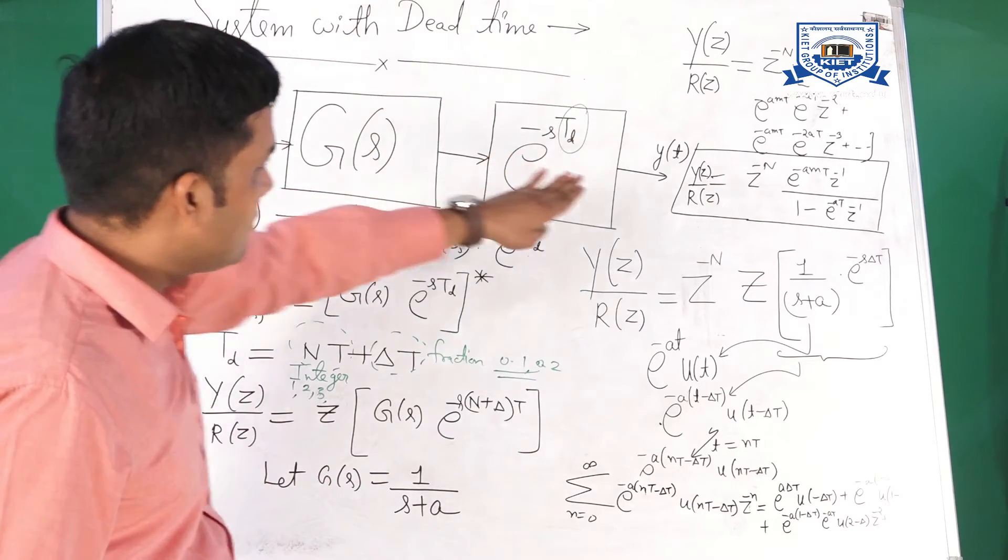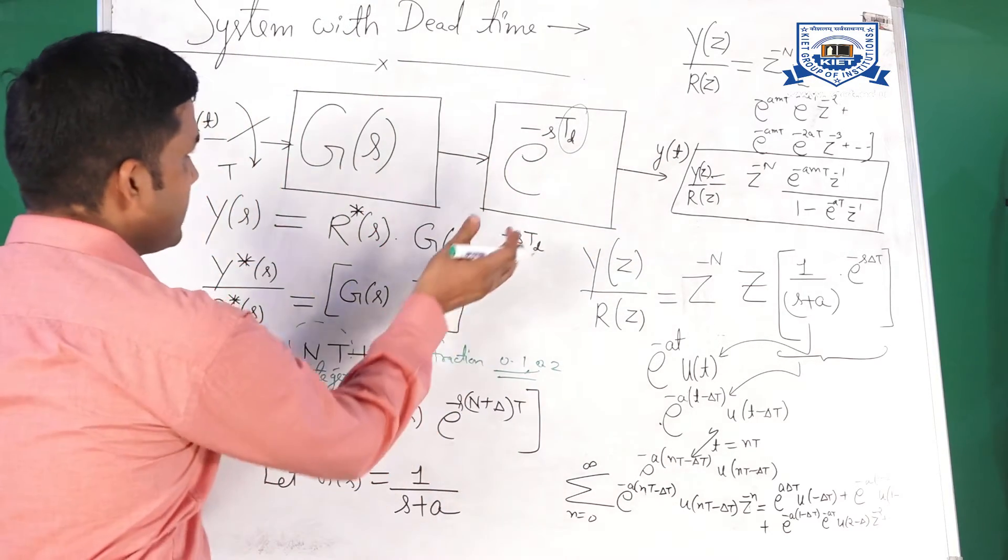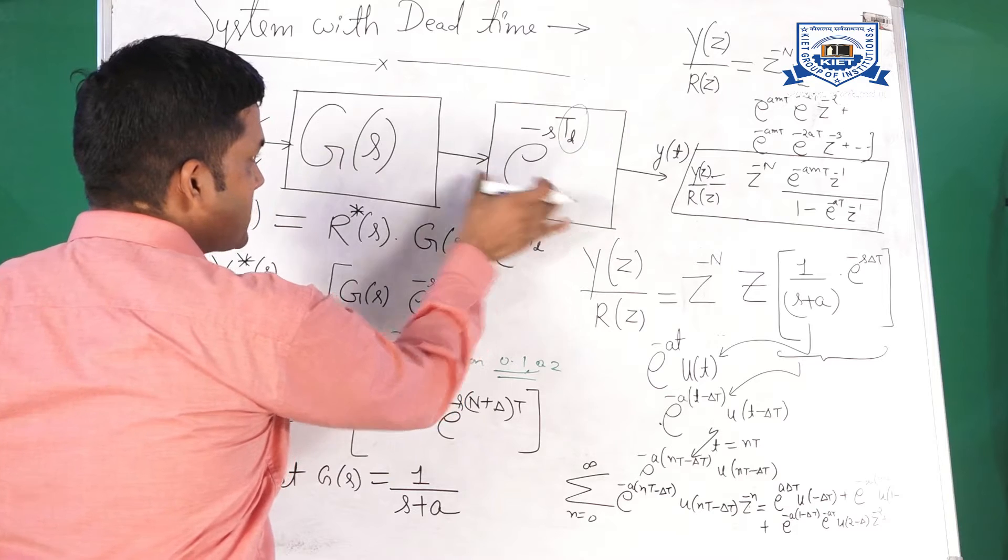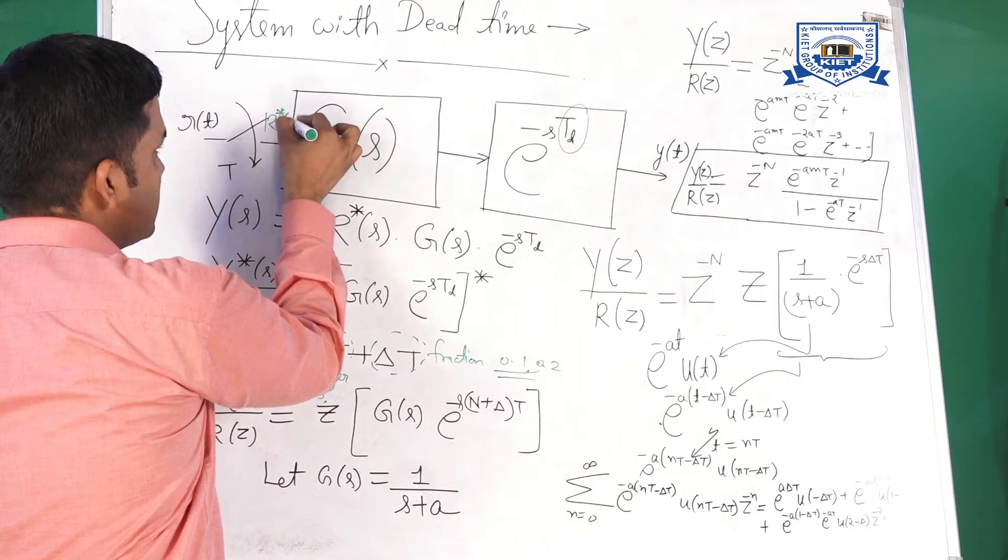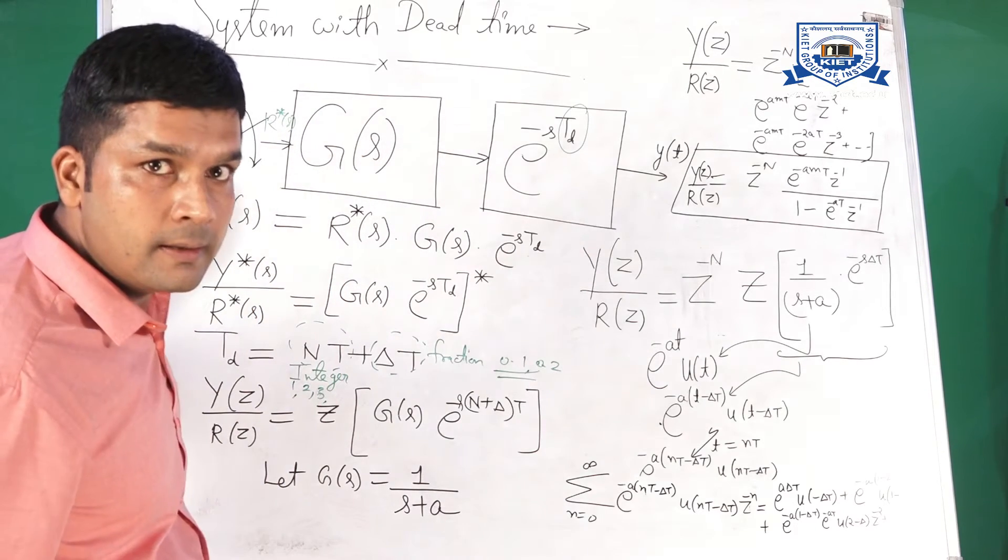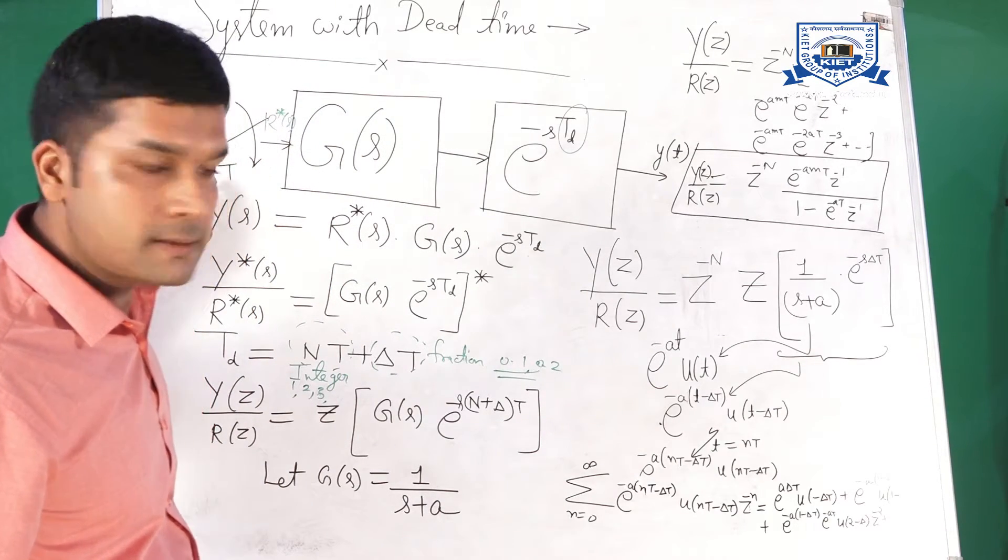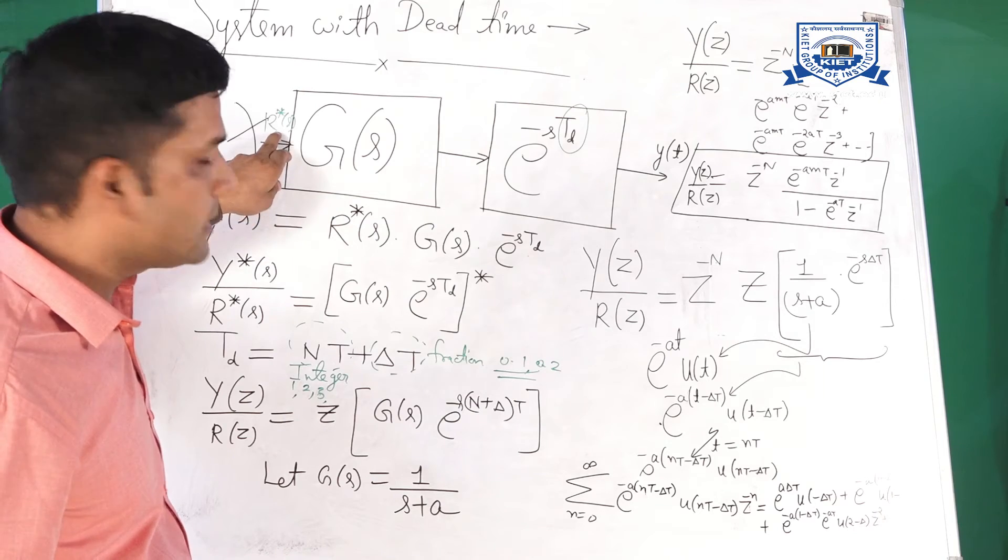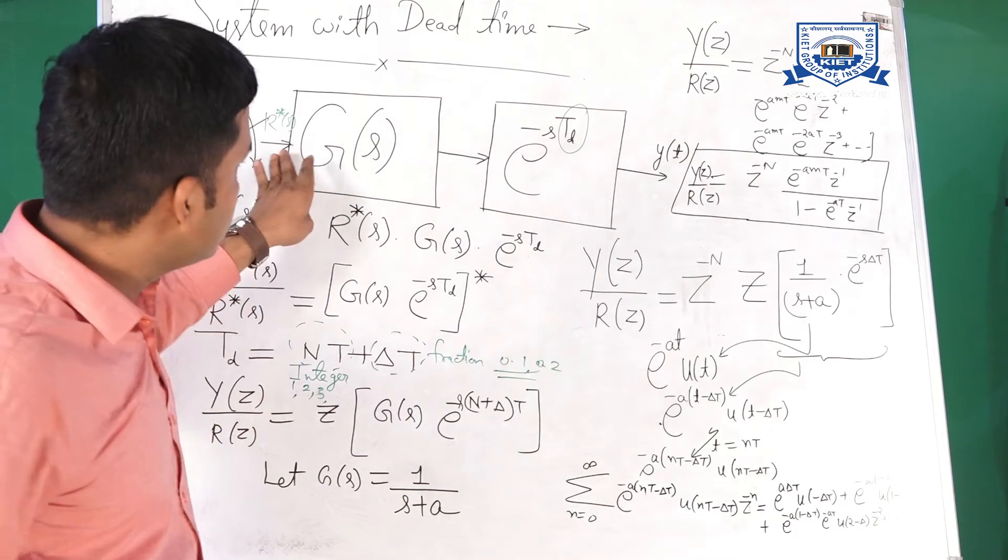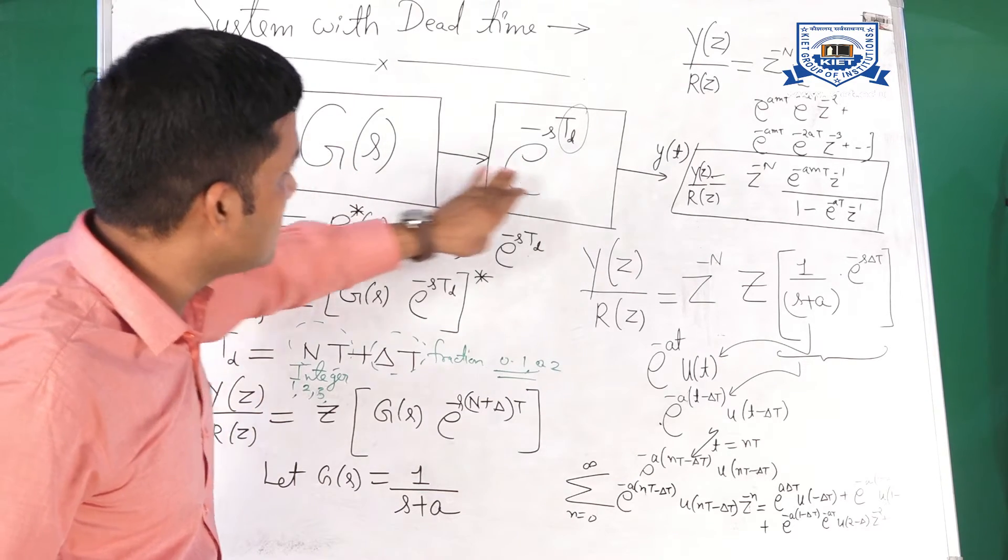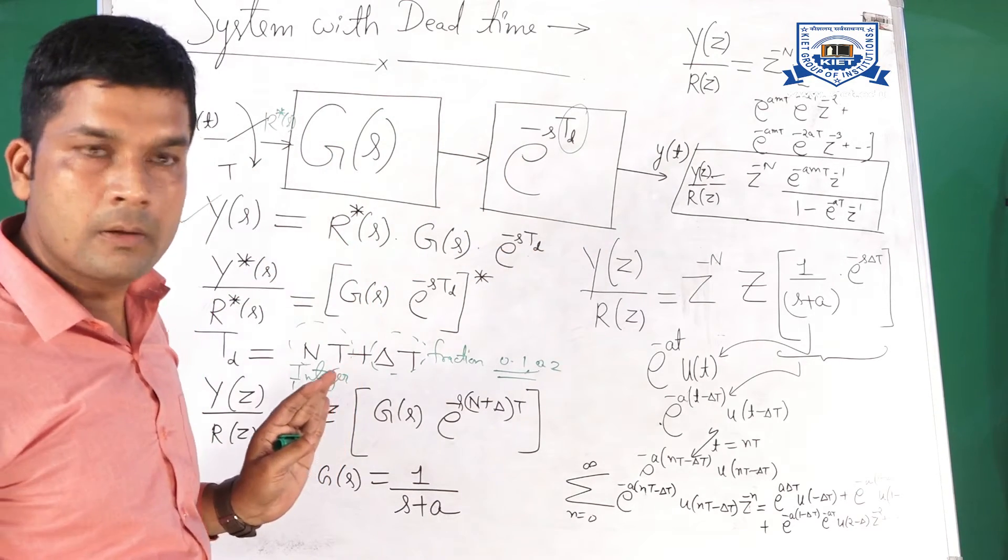Now, what is the value of Ys? Ys will be equal to multiplication of these blocks into R star s. Because this is Rt, in Laplace transform this is Rs. After sampler, it will be converted into R star s. Now output is equal to R star s into Gs into this.